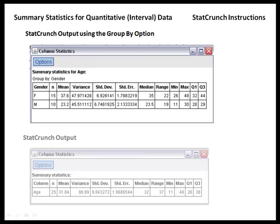Notice the output at the bottom that's faded out was the original output we obtained. The output at the top now has two rows of information. The first row contains summary statistics for the 15 females in our sample, while the second row contains summary statistics for the 10 males in our sample.